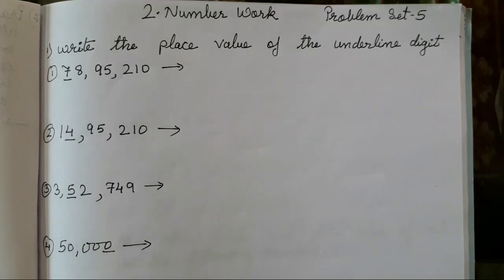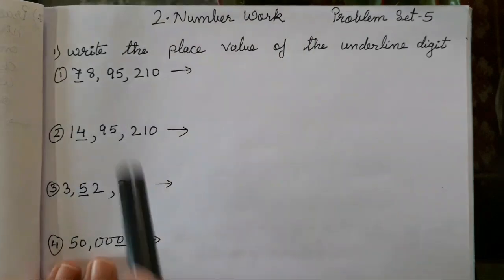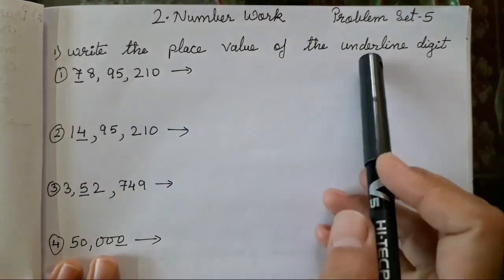Hello everyone, today we are going to study chapter number two, Number Work, problem set number five. In today's video we are going to study about the expanded form, how to write the expanded form of the given digits, and how to find the place value of the digits. Place value we have already done in the previous video — the link will be provided in the description box. Let's start with the first question: write the place value of the underlined digit.